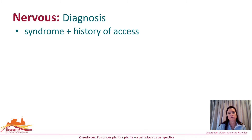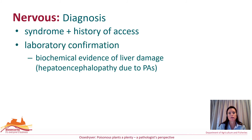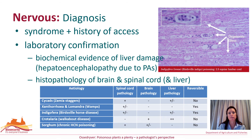Diagnosis of these nervous conditions in both ruminants and horses is generally made in the field based on the presenting clinical syndrome and a history of exposure to the responsible plants. Laboratory testing for biochemical evidence of liver damage may be a useful ante-mortem marker for hepatic encephalopathy cases. However, confirmation should be attempted through histological examination of the brain, spinal cord and liver. Wallerian degeneration of the spinal cord, whilst a non-specific change, is a prominent feature of cycad and chronic cyanide poisoning.